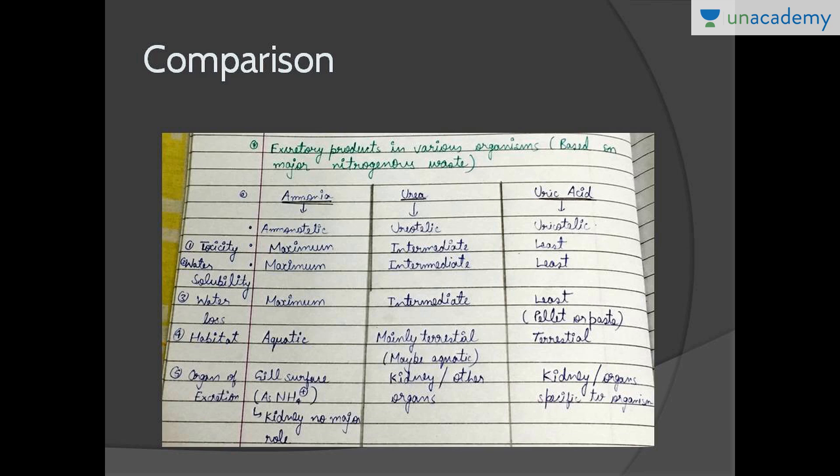Uric acid is the least soluble in water, the least toxic, and leads to the least excretion of water. It is excreted in the form of pellets or paste — if you have seen bird droppings, that is an example of uric acid excretion. The organ of excretion is again the kidney.